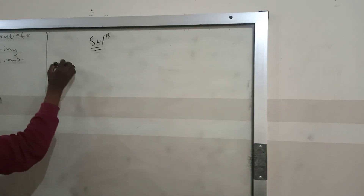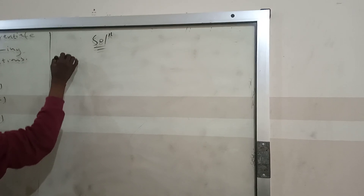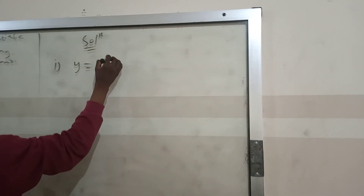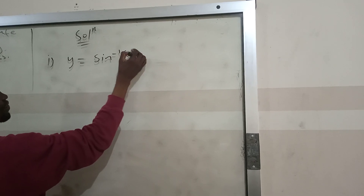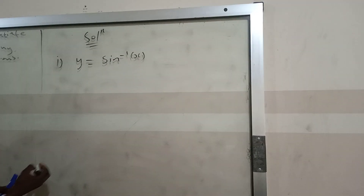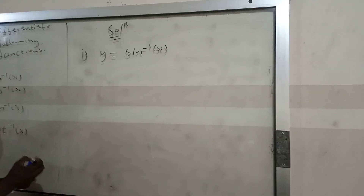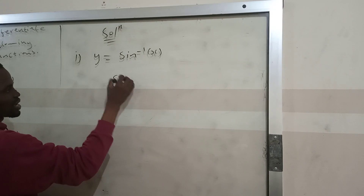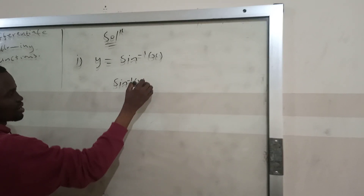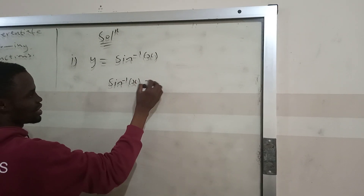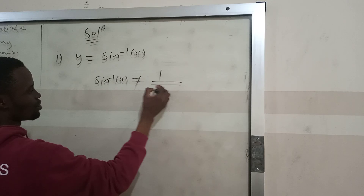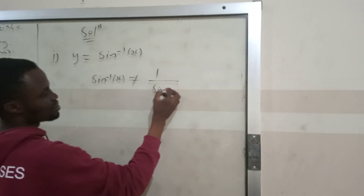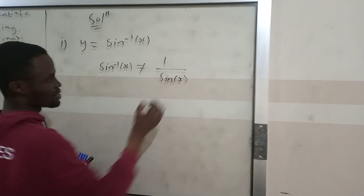For (i), y equals sine inverse of x. Please be careful — sine inverse of x can never be equal to 1 over sine x.